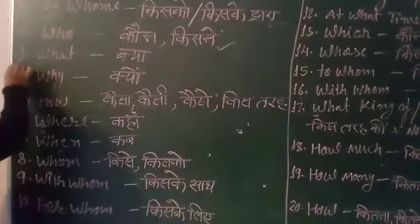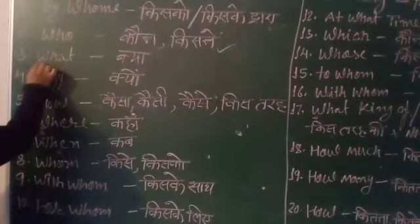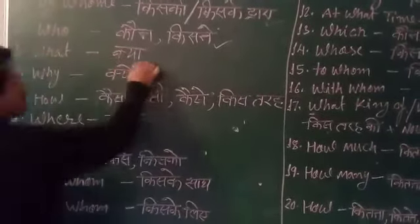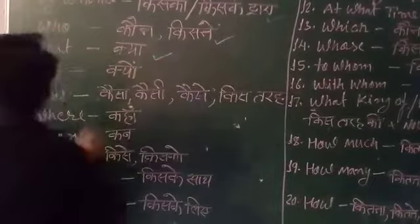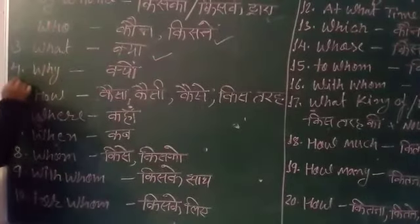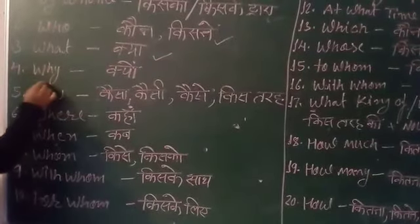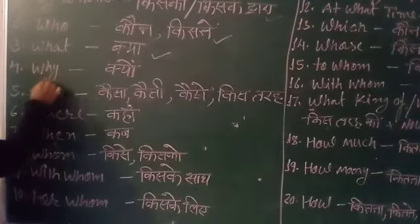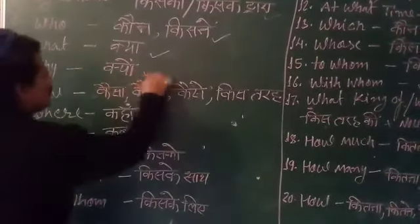The third word is 'What' — 'What' means Kya. Then the fourth word is 'Why' — 'Why' means Kyon.